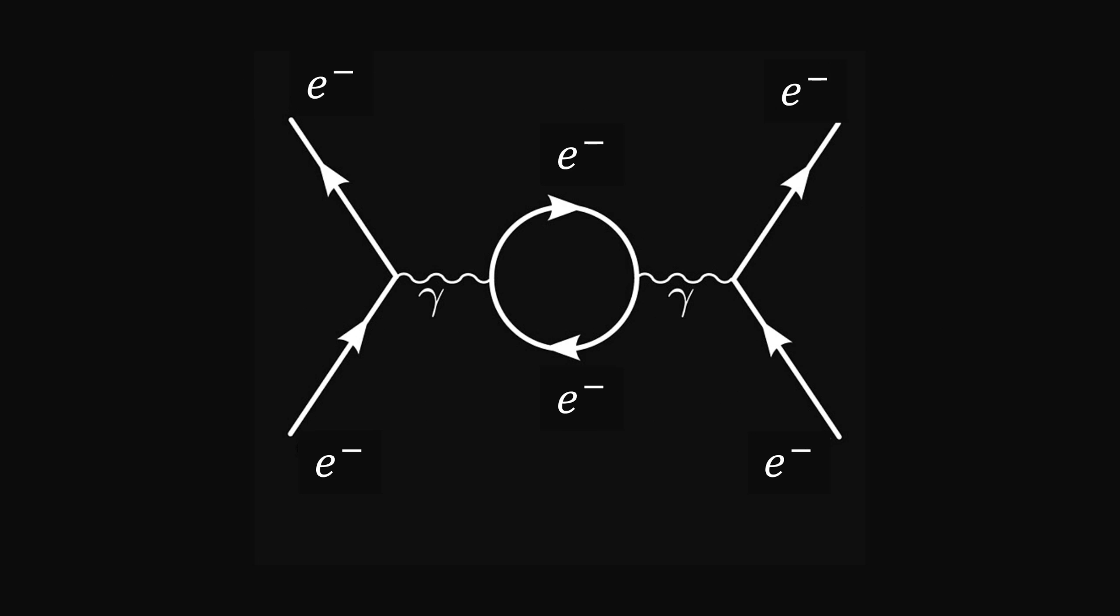To understand why sin²θw changes, that is, why the couplings change differently, it is necessary to draw the diagrams that lead to α1 and α2.